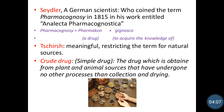Schedler, a German scientist, coined the term Pharmacognosy in 1815 in his work entitled Analecta Pharmacognostica, from the combination of two Greek words. Pharmakon means a drug and Gignosco means to acquire the knowledge of a drug. So in this way, the simple meaning of Pharmacognosy is to acquire the knowledge of drug.